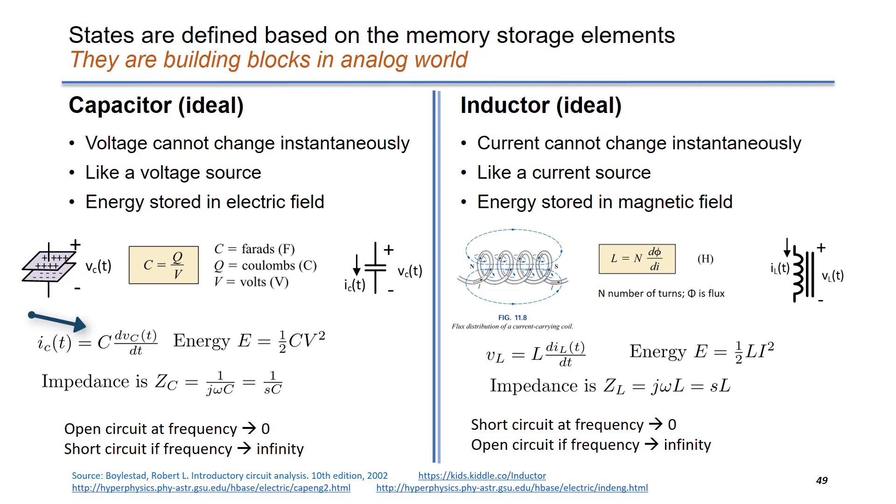The current into the capacitor is defined as C times dV over dt. By this equation, we can see that if the dV over dt is bigger, that means you have more current into the capacitor.